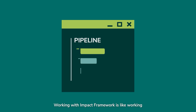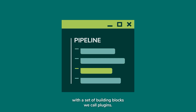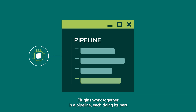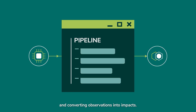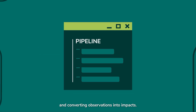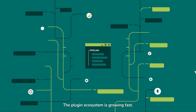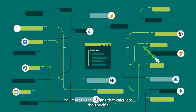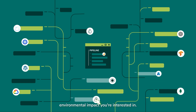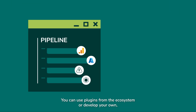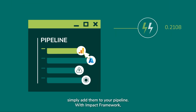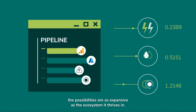Working with Impact Framework is like working with a set of building blocks we call plugins. Plugins work together in a pipeline, each doing its part in converting observations into impacts. The plugin ecosystem is growing fast. You choose the plugins that calculate the specific environmental impact you're interested in. You can use plugins from the ecosystem or develop your own — simply add them to your pipeline.